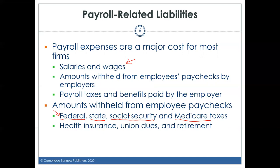The amounts withheld must be turned over to the government — employers can't keep them. Employers also withhold voluntary amounts from employees' paychecks, such as health insurance, union dues, and retirement contributions. Employees can opt out of these voluntary withholdings, though most opt in because employers partner with providers to get significant discounts.